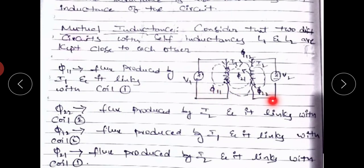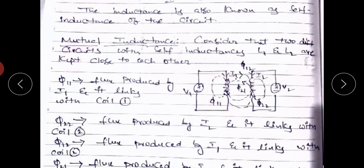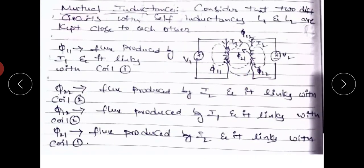The four fluxes are φ11, φ22, φ12, and φ21. φ11 is the magnetic flux produced by coil 1 that links with coil 1. φ22 is the flux of the second coil that links with the second coil. φ12 is the flux produced by coil 1 that links with the second coil. φ21 is the flux produced by the second coil that links with the first coil.